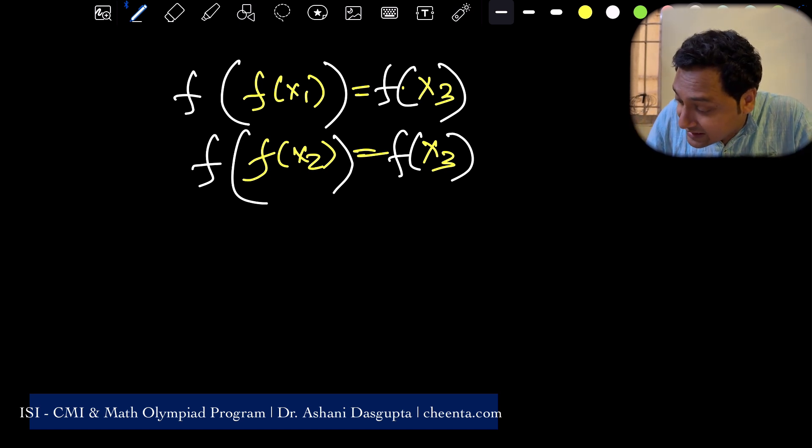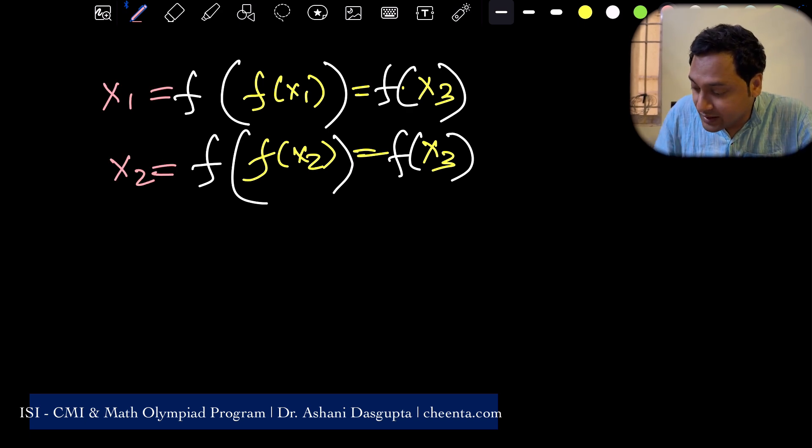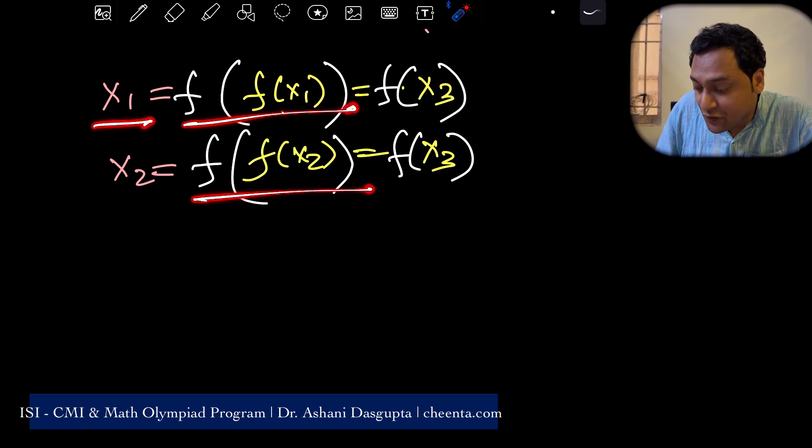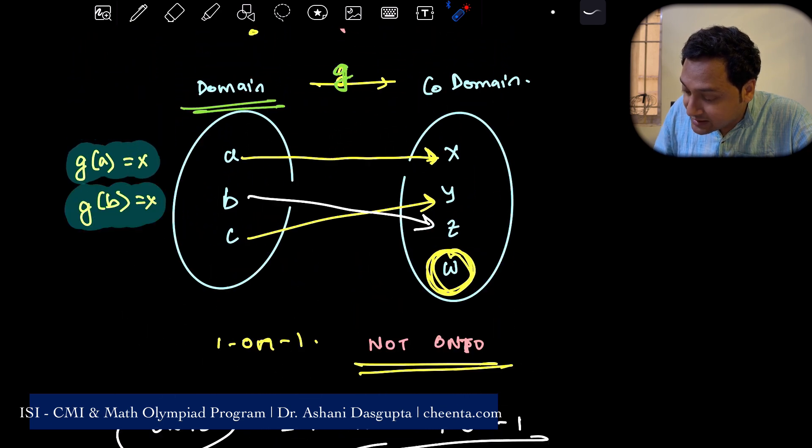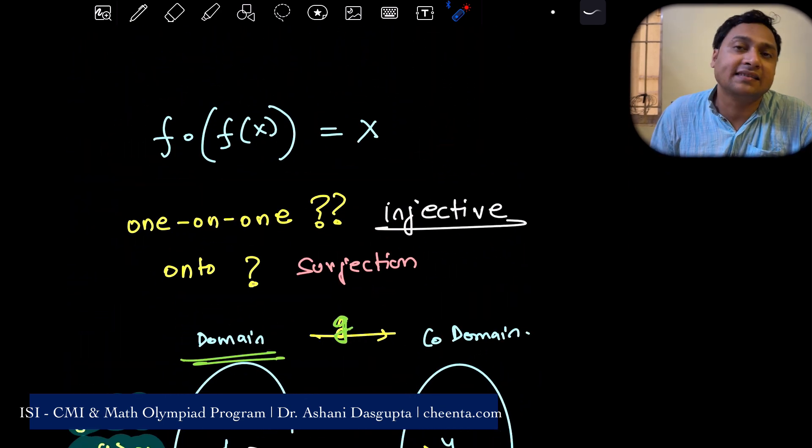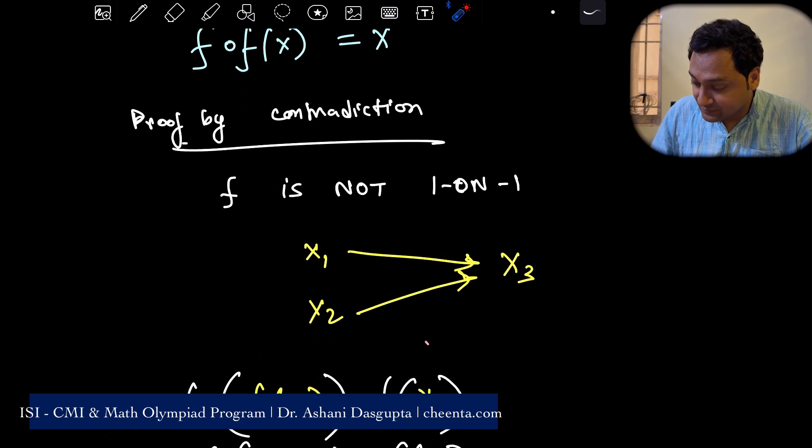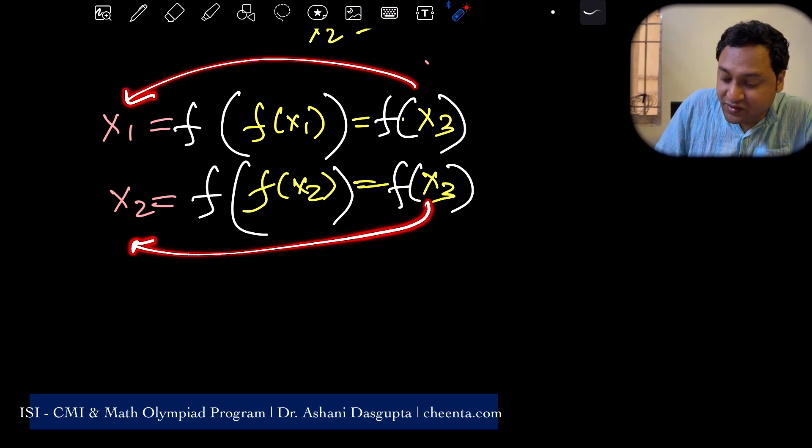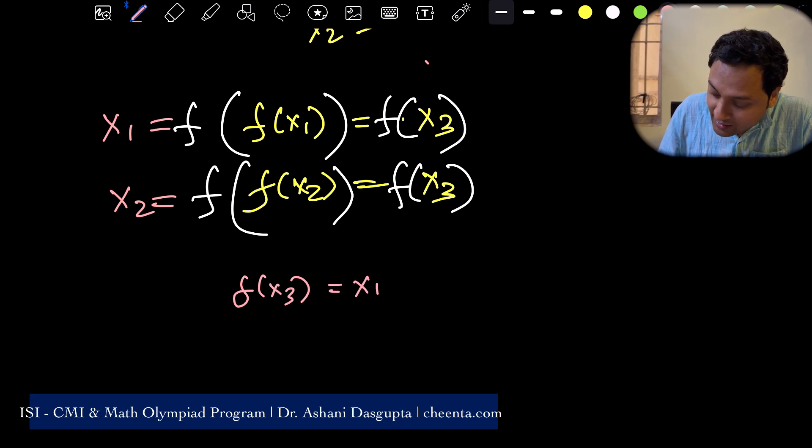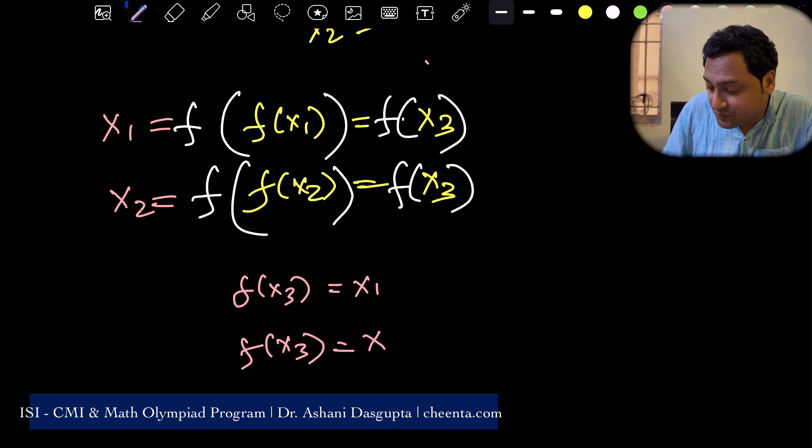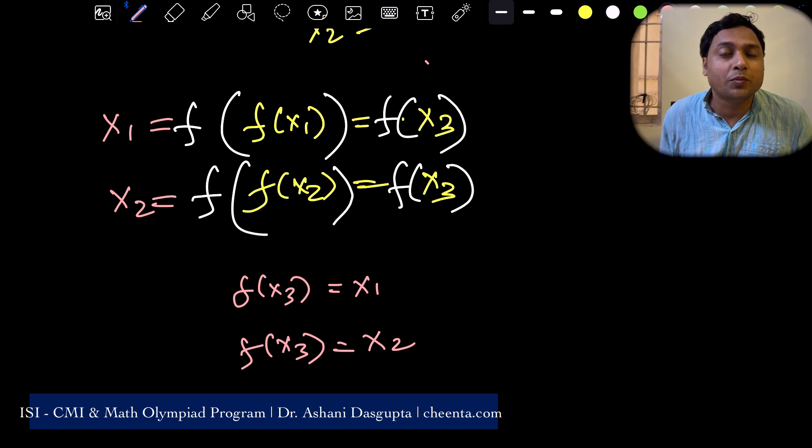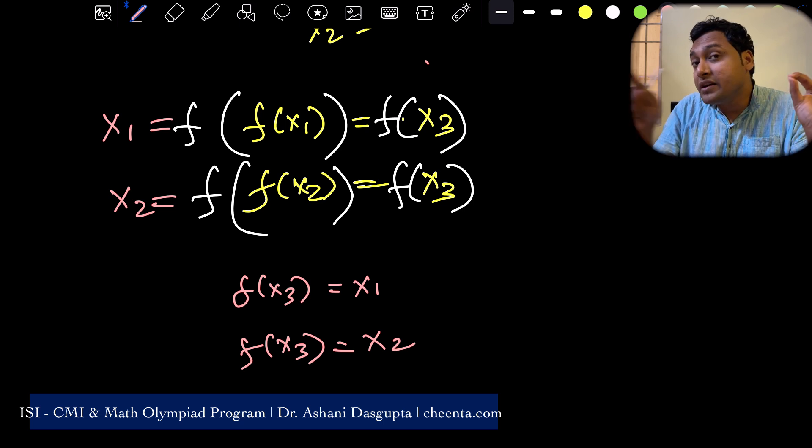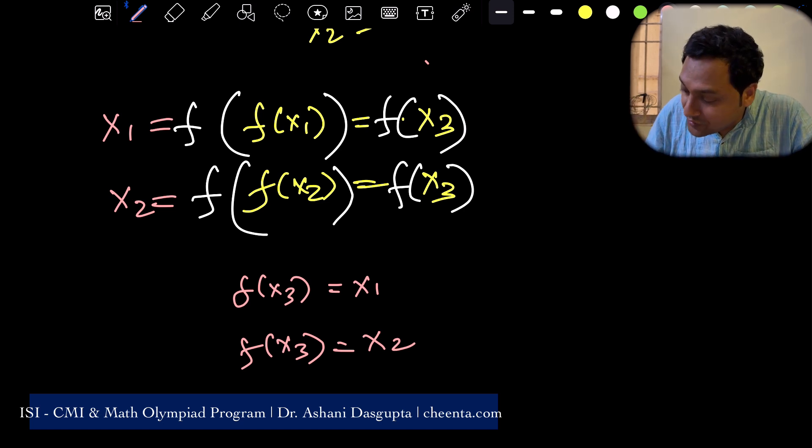Now, on the left hand side, the condition of the function says this one is x1 and this one is x2. f of f of x1 is x1, f of f of x2 is x2. Because that's what's given in the function. It's given that f of f of x is x. But then what we found is f of x3 is x1, f of x3 is x2. How can that be? How can one input produce two outputs as a function? That cannot happen. Given one input, there has to be only one output. Therefore, we reached a contradiction.